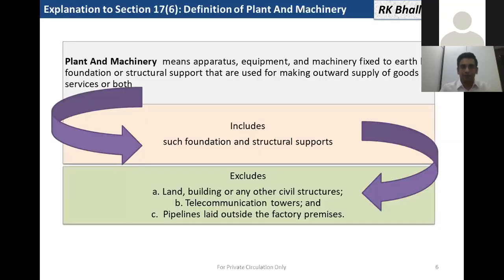Now, what is plant and machinery? There is an explanation in Section 17(6) which says that plant and machinery means apparatus, equipment, and machinery fixed to earth by foundation or structural support that are used for making outward supply of goods or services or both, and includes such foundation and structural supports. So plant and machinery is defined in this explanation for the purpose of claiming ITC.